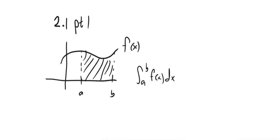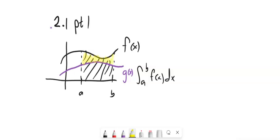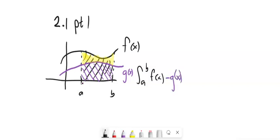Now, if we had a second function g, and I wanted to know the area between them — the area from a to b over that range — we know the area of f of x and the area under g. If I take the area under g and subtract it from the area under f, I get that middle region. So essentially, the integral of the top one minus the bottom one over that range gives the area between the two curves.